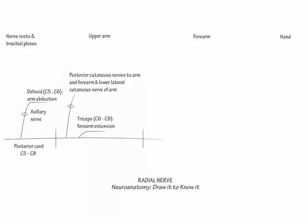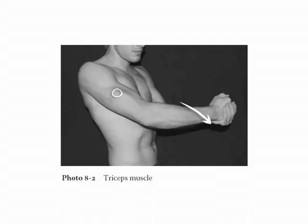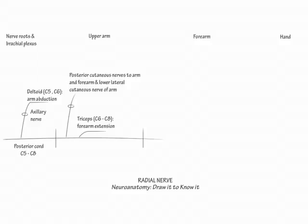The triceps is supplied by C6 to C8. To demonstrate the triceps action, extend your forearm. Now indicate the presence of the spiral groove, where the radial nerve opposes the humerus and is susceptible to compression from immobilization, such as in a Saturday night palsy.